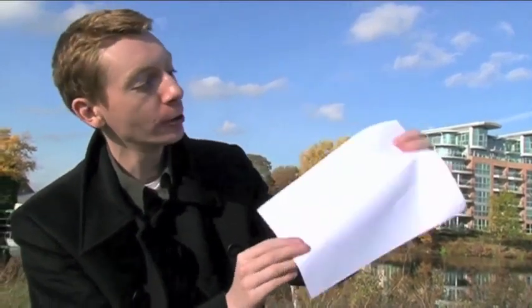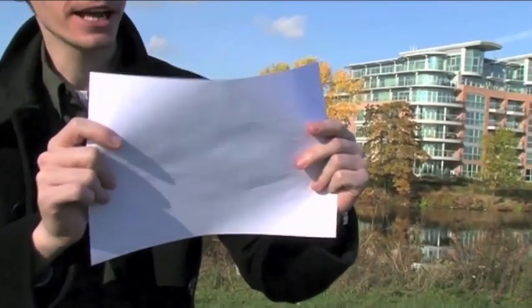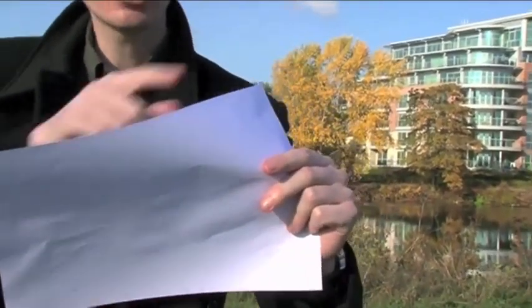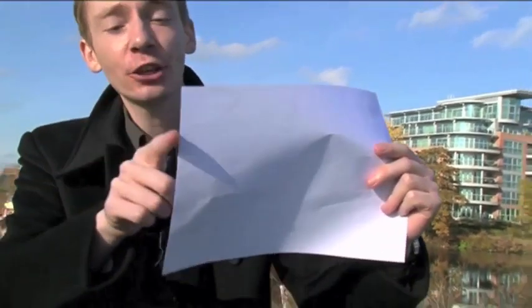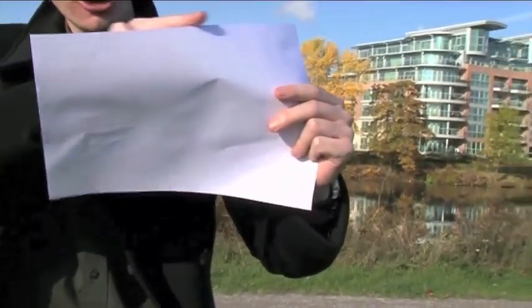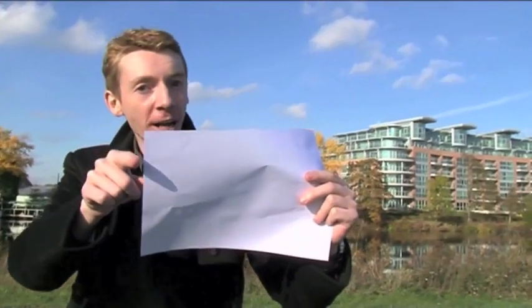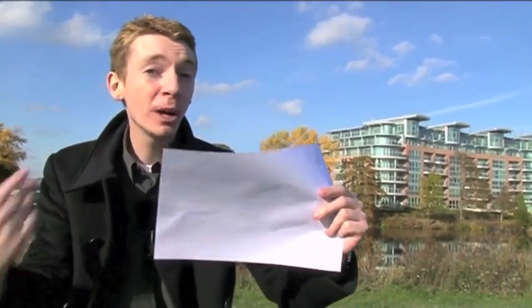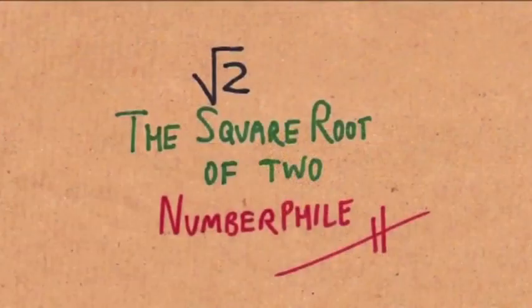If you take the A series of paper, so this is A4 paper, it's pretty standard in most of the world. If you look at the ratio between the long edge and the short edge, which means if you measure the long edge and divide by the short edge, it will be the square root of 2. And they pick this on purpose.